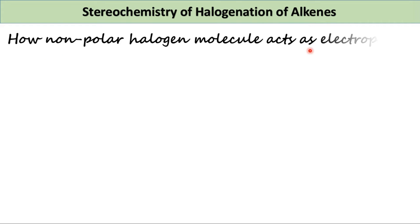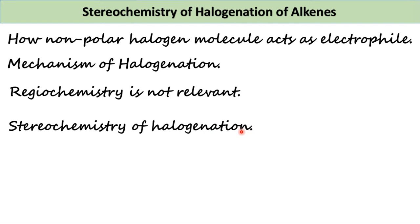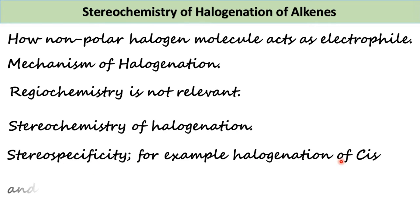We'll cover the mechanism of halogenation, regiochemistry of halogenation is not relevant, stereochemistry of halogenation, stereospecificity, and examples showing how halogenation of cis and trans-2-butene give different products.